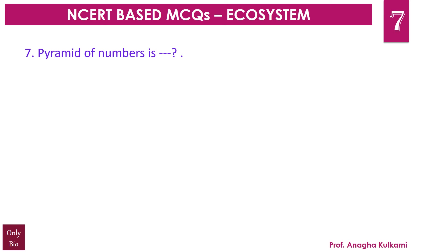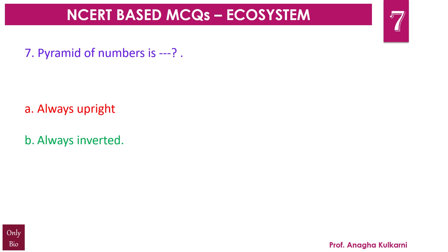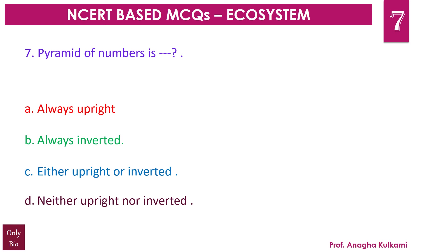Question number 7. Pyramid of numbers is: A. always upright, B. always inverted, C. either upright or inverted, D. neither upright nor inverted. The correct answer is C. The pyramid of numbers is either upright or inverted. In grassland, forest, or pond ecosystems it is upright, whereas in a parasitic food chain it is inverted. In an ecosystem dominated by trees, the pyramid of numbers is spindle-shaped or inverted.